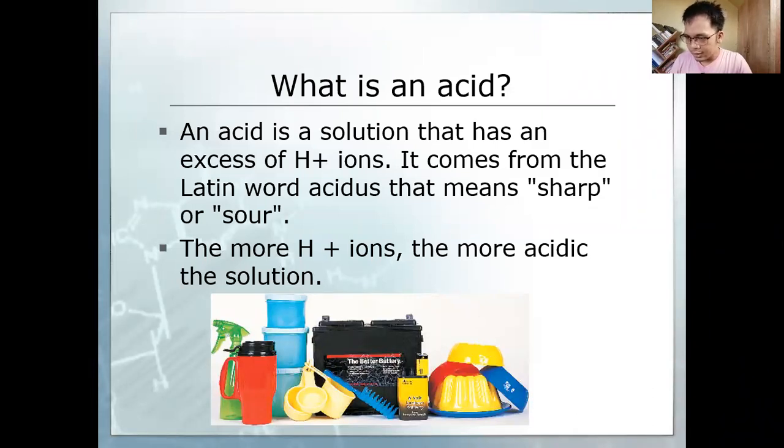What is an acid? Acid is a solution that has an excess hydrogen ions. It comes from the Latin word acidus, that means sharp or sour. The more hydrogen ions present in the solution, means the more acidic it is.